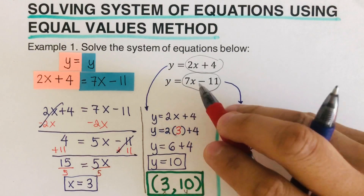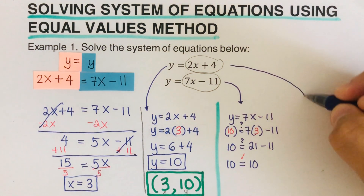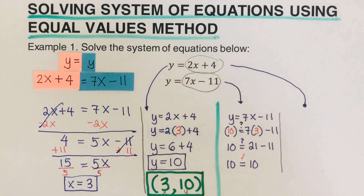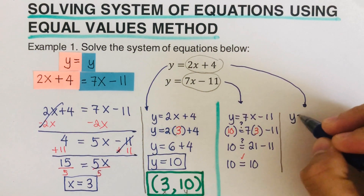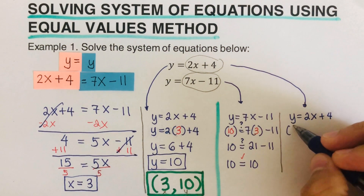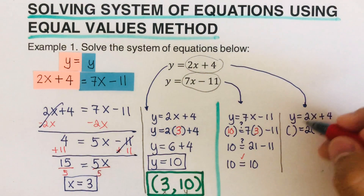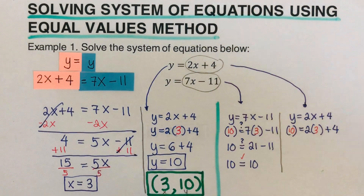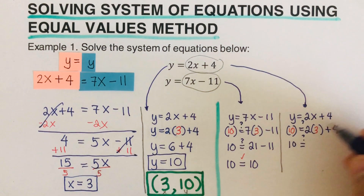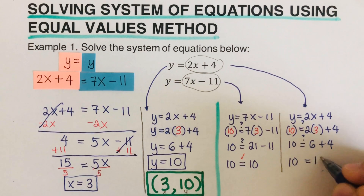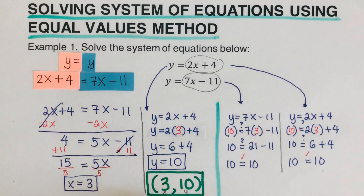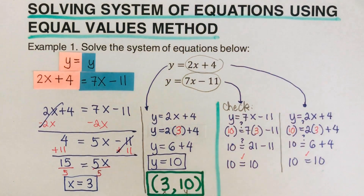It worked for the second equation. Now it has to work for the first equation too — it has to work for both of them. The first equation is y equals 2x plus 4. Plugging in x equals 3 and y equals 10: 10 equals 2 times 3 plus 4, which is 6 plus 4, so 10 equals 10. Our solution is confirmed correct. That is step 4 — always check your work.